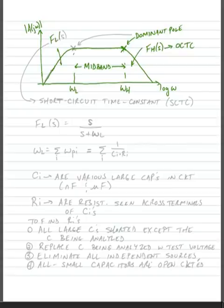In this lesson, we're going to learn how to find the low frequency response, FL of s. It will also involve a dominant pole that causes the gain to flatten out, and we're going to find this using a technique called short circuit time constant, or SCTC as we'll abbreviate it.